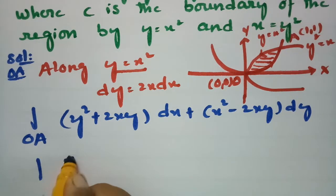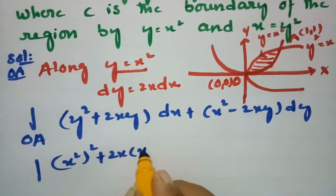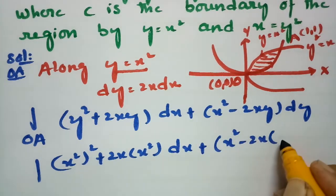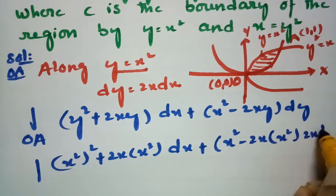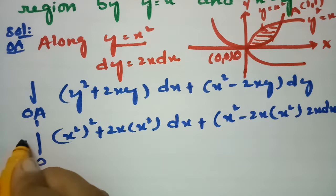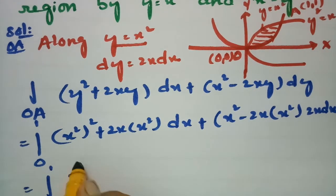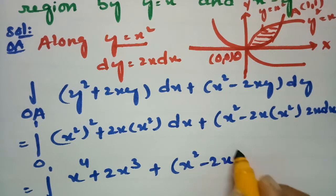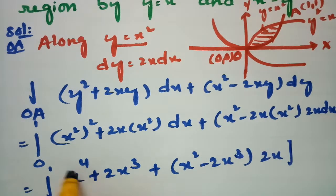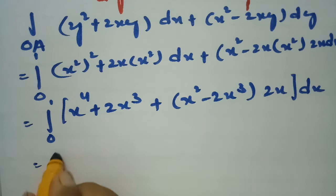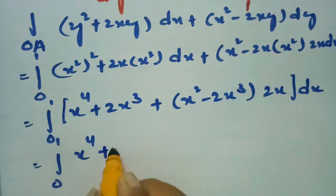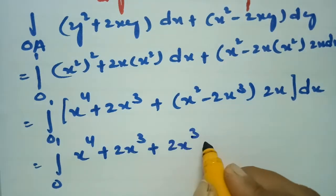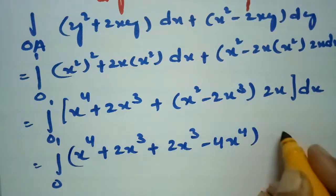Substituting y = x²: y² becomes x⁴, and 2xy becomes 2x·x² = 2x³. Also dy = 2x dx. So the integrand becomes (x⁴ + 2x³)dx + (x² − 2x³)·2x dx, from 0 to 1. Expanding: x⁴ + 2x³ + 2x³ − 4x⁴, which simplifies to 4x³ − 3x⁴.